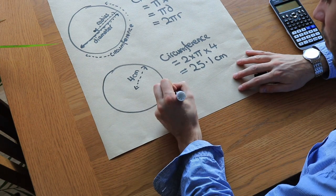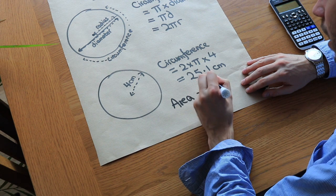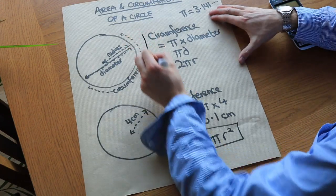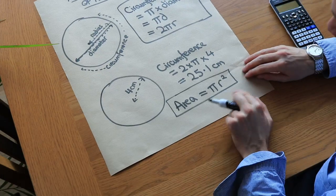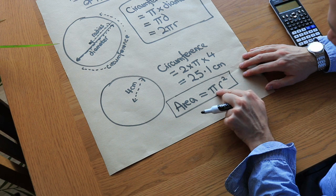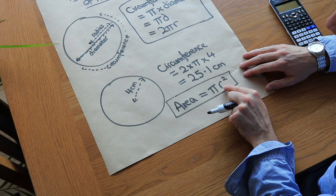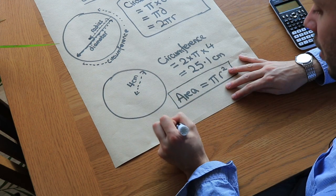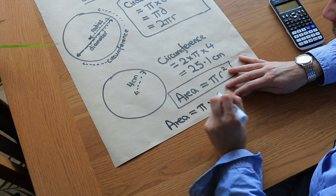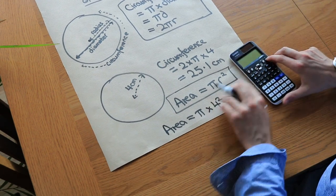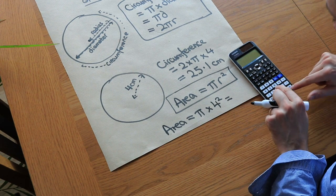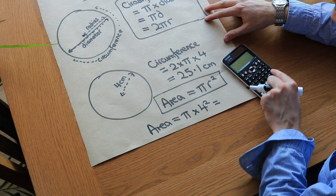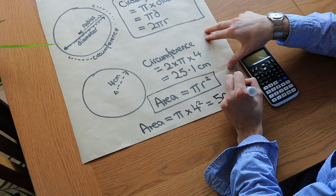Now what about the area of the circle? The area is equal to π times the radius squared — that's our second key formula. Notice that by order of operations, the squared comes before multiplying by pi: it's the radius squared, then times pi. It's not pi times the radius and then square it, because that would give a different value. For our example, the area is π times 4 squared, which is π times 16, giving 16π. Pressing the SD key gives 50.3 centimeters squared.